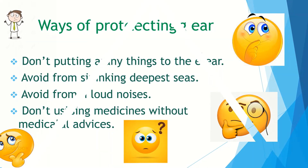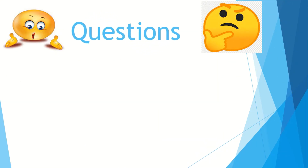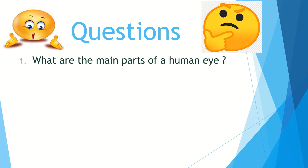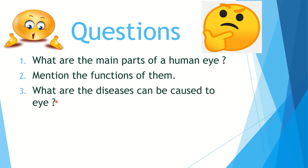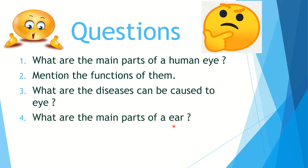You can answer these questions in the comment box. What are the main parts of the human eye? Mention their functions. What are the diseases that can affect the eye? What are the main parts of the ear? What are the ear defects? Mention the measures to protect the ear.